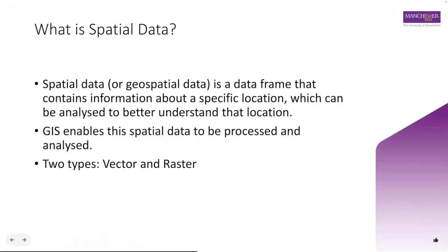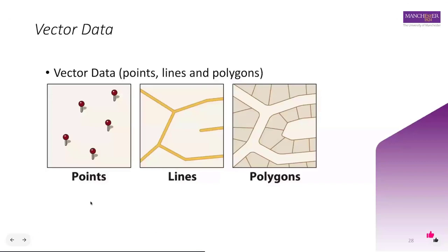We'll now look at what spatial data is. In short, spatial data is just a representation of the real world — it attempts to represent the physical features of data in an accurate way, and GIS enables this spatial data to be processed and analyzed. There are typically two types of spatial data: vector and raster data. Vector data contains points, lines and/or polygons and is the most common form of spatial data.